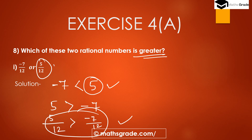So from these two rational numbers, minus 7 divided by 12 and 5 divided by 12, the greater rational number is 5 divided by 12.